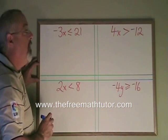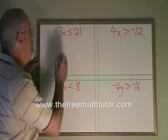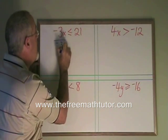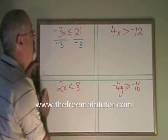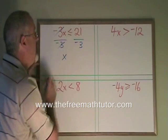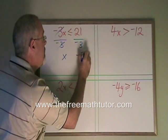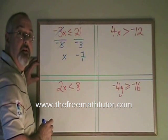Here, my x is being multiplied by a negative 3. So to move the negative 3 away from my x, I will divide both sides by negative 3. These cancel. My x is isolated. 21 divided by negative 3 is negative 7, and all that's left is to write down my symbol.